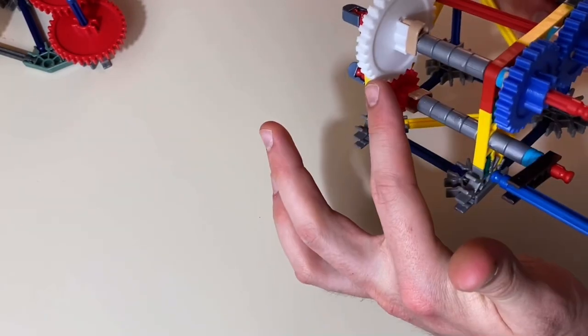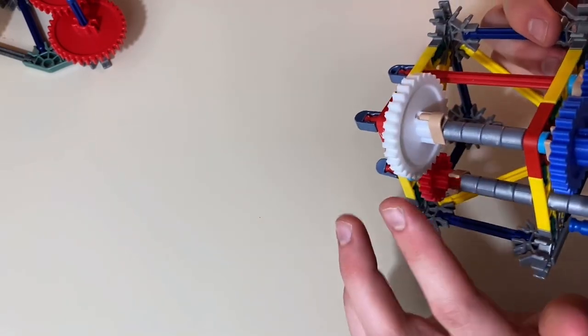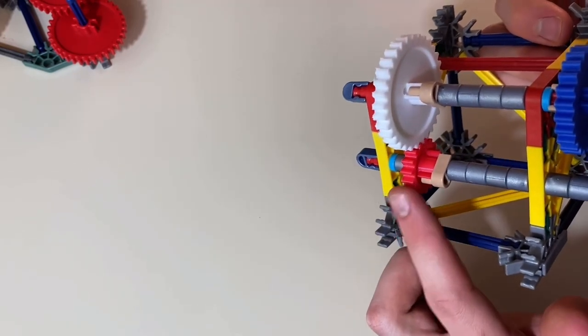And then you have this white gear here with a small red gear, and this is a two-to-one ratio. So the number of teeth on this white gear is twice as many as the number of teeth in the small red gear.